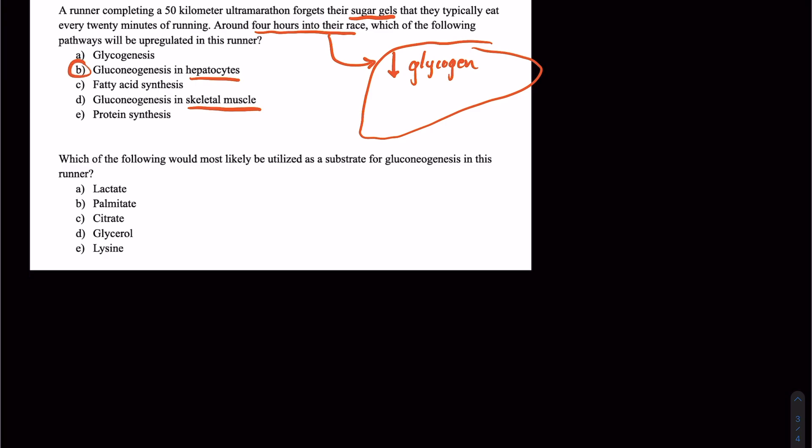So remember, the liver is going to be the predominant site of gluconeogenesis. Gluconeogenesis, again, being that very selfless, self-sacrificial organ that's producing glucose for the rest of the body to use, namely the skeletal muscle here.